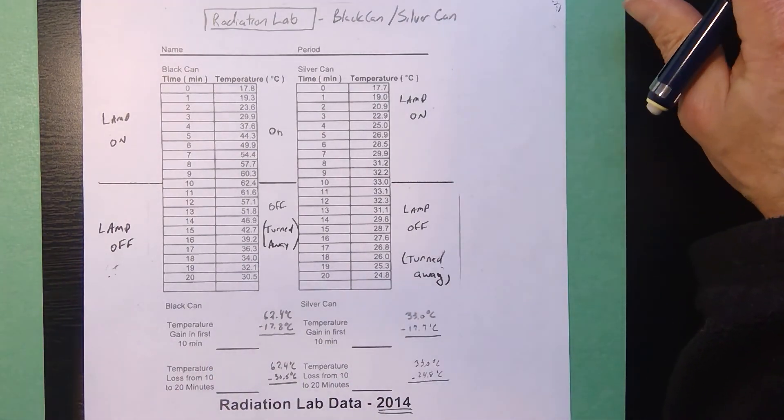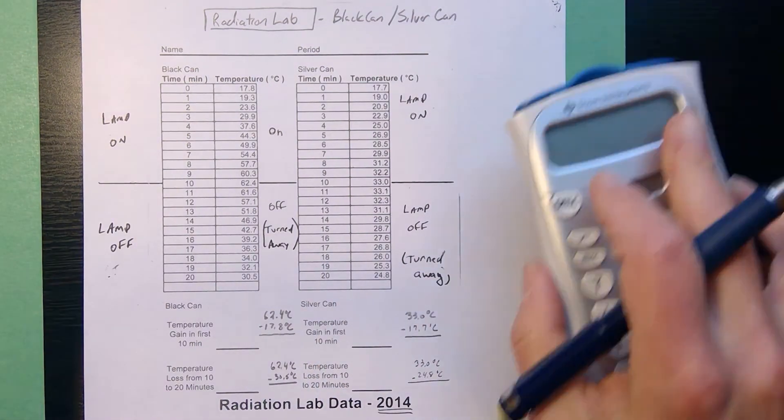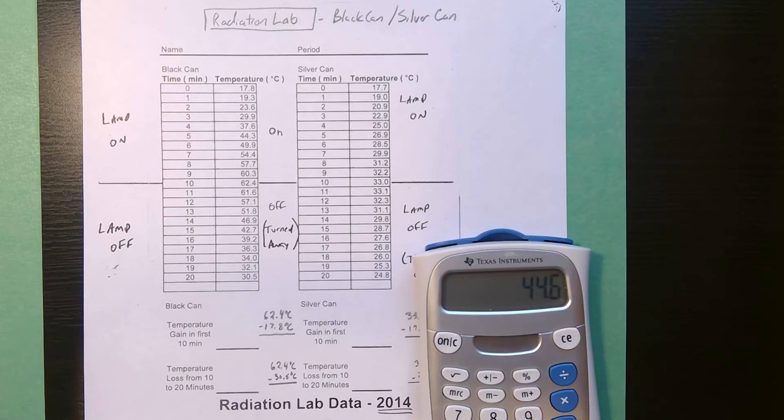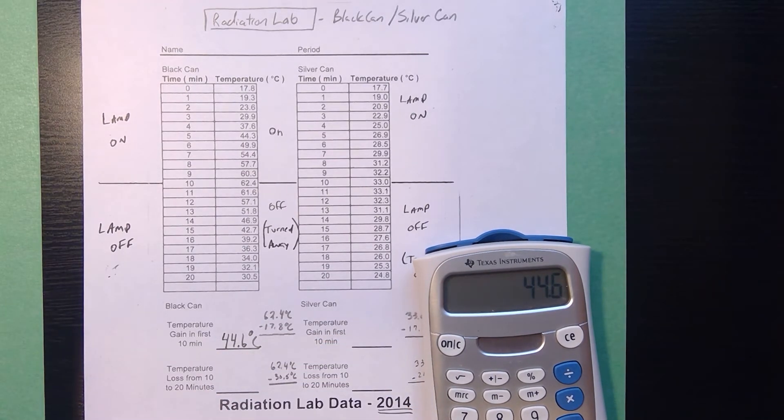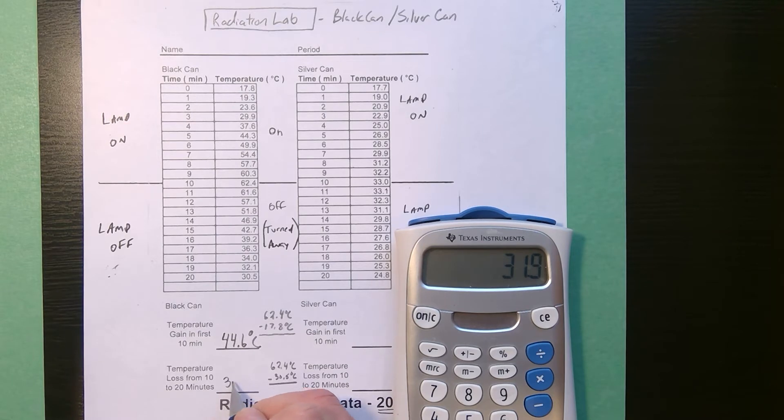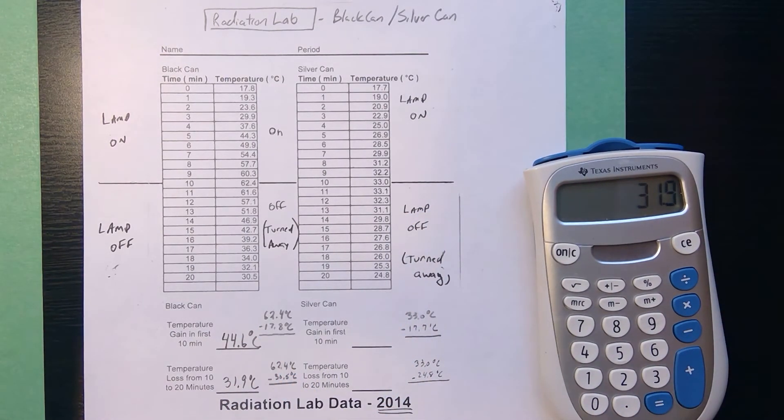It asks you to find the temperature gain in the first 10 minutes so the black can started at 17.8 it went up to 62.4 so 62.4 minus 17.8 there was a net increase the black can went up by 44.6 degrees Celsius in 10 minutes. Now, if I look at how much energy it lost it went from 62.4 back down to 30.5 so it dropped 31.9 degrees Celsius. So there was a significantly greater increase in temperature and decrease in temperature for the black can.